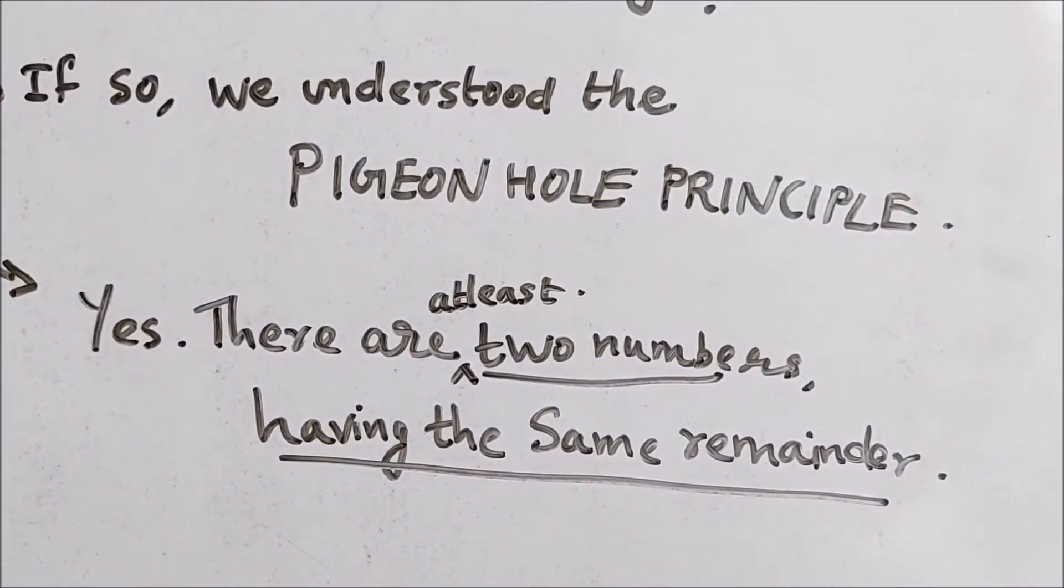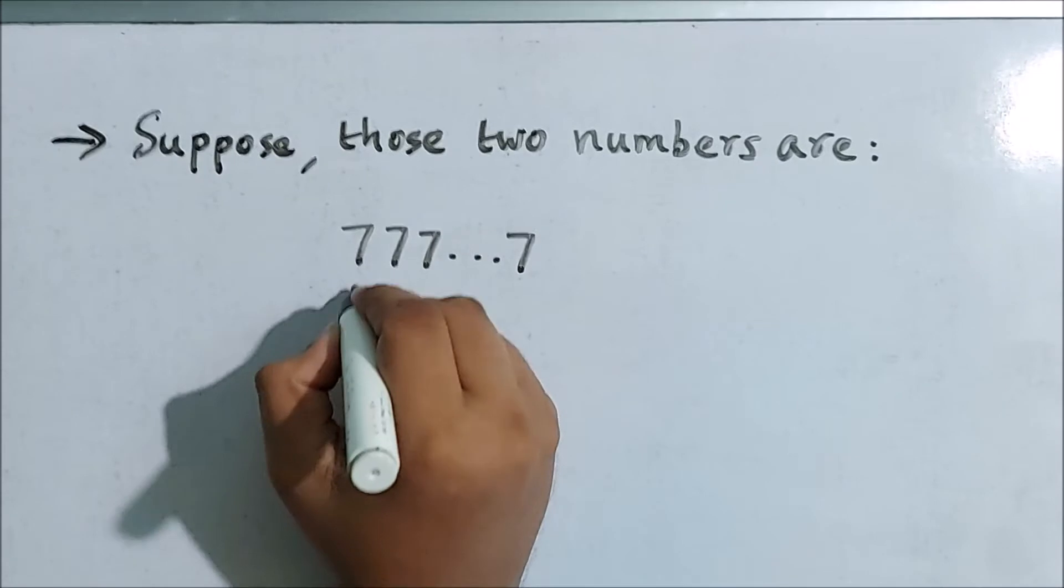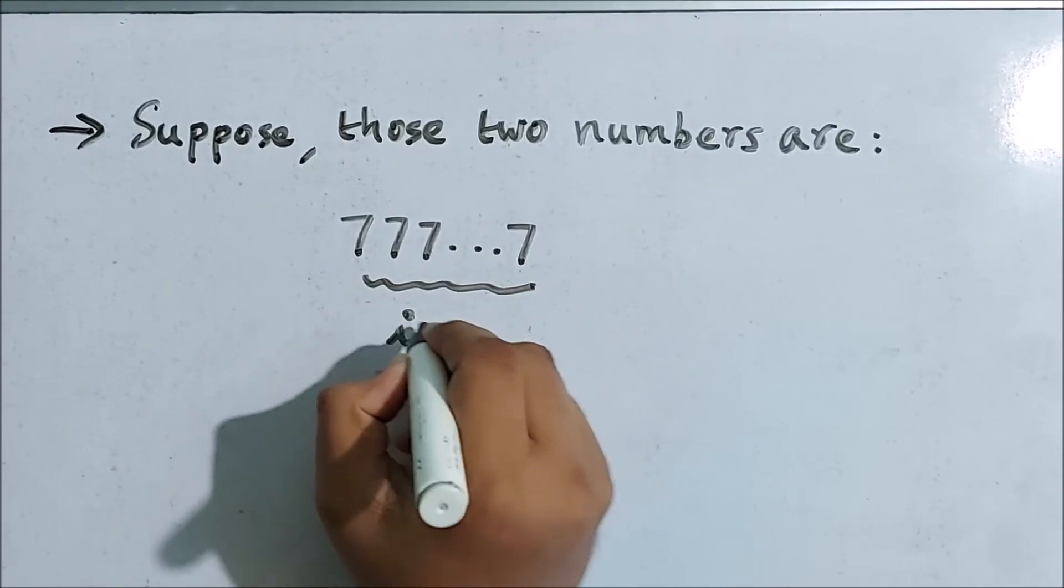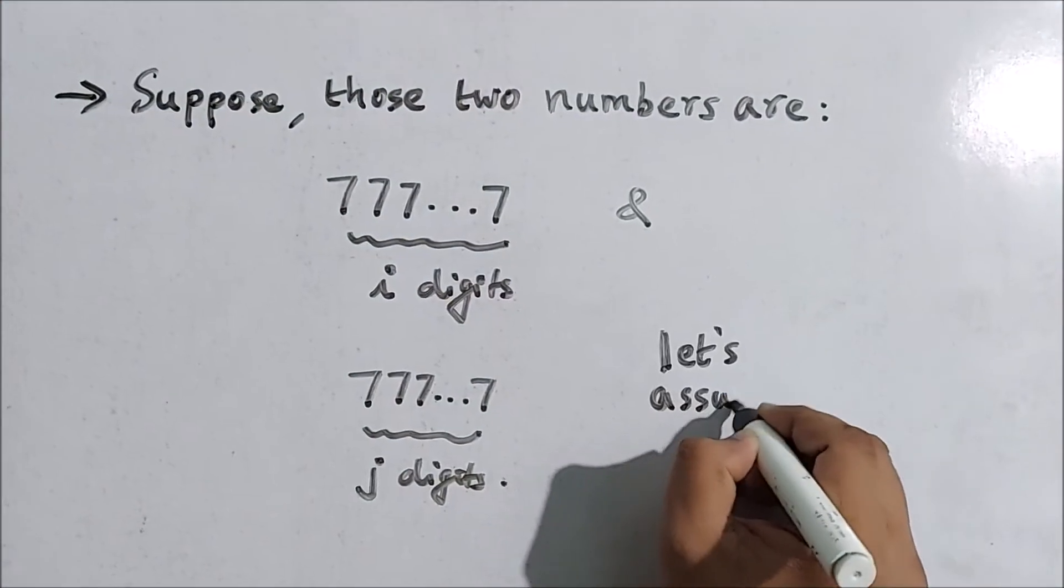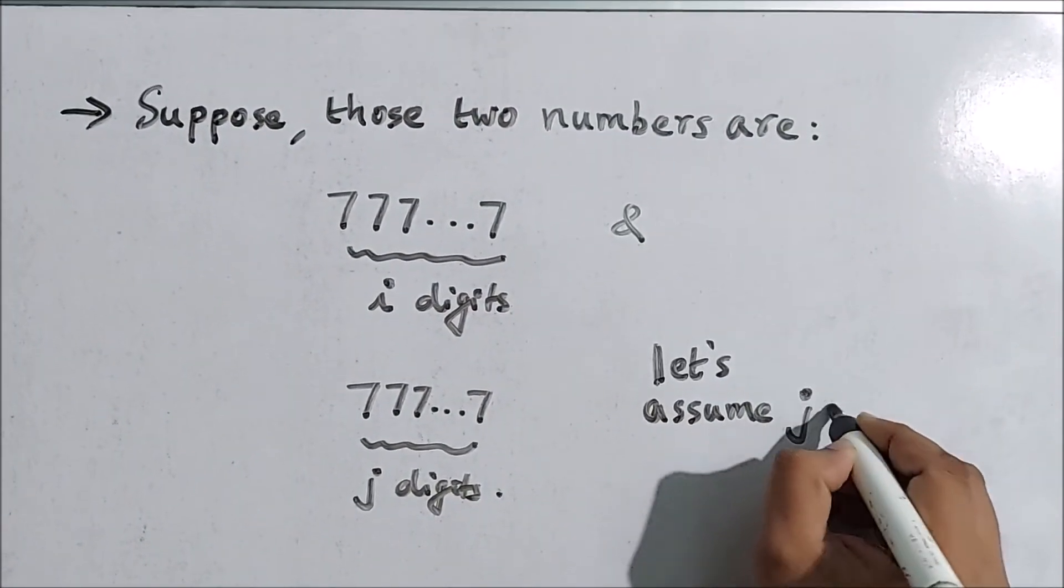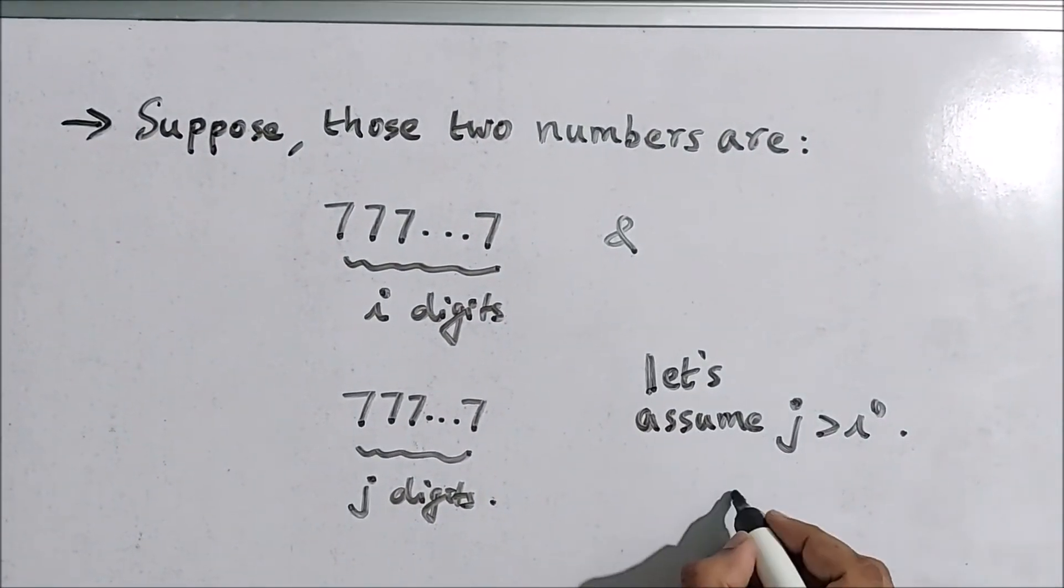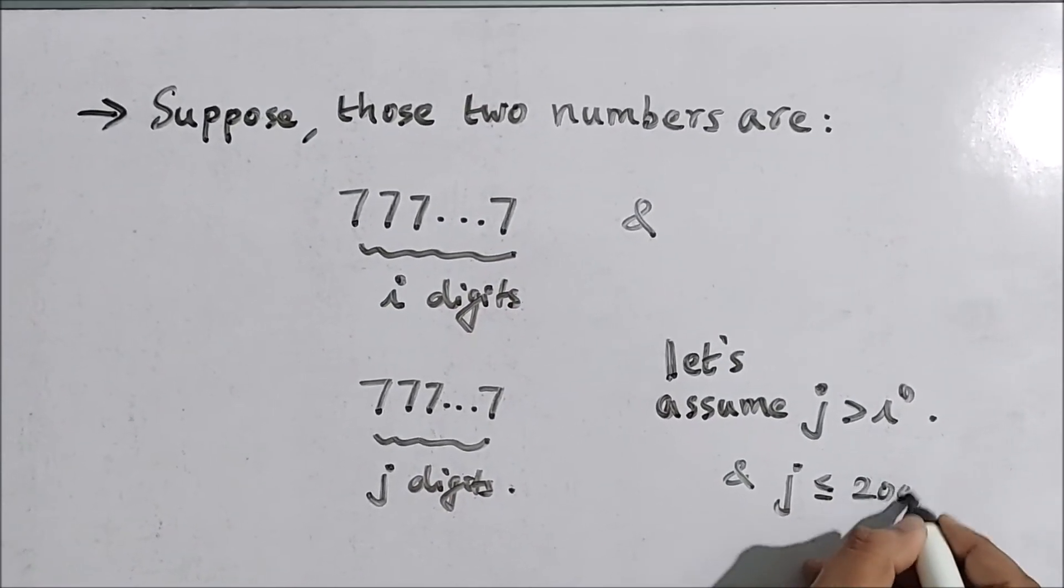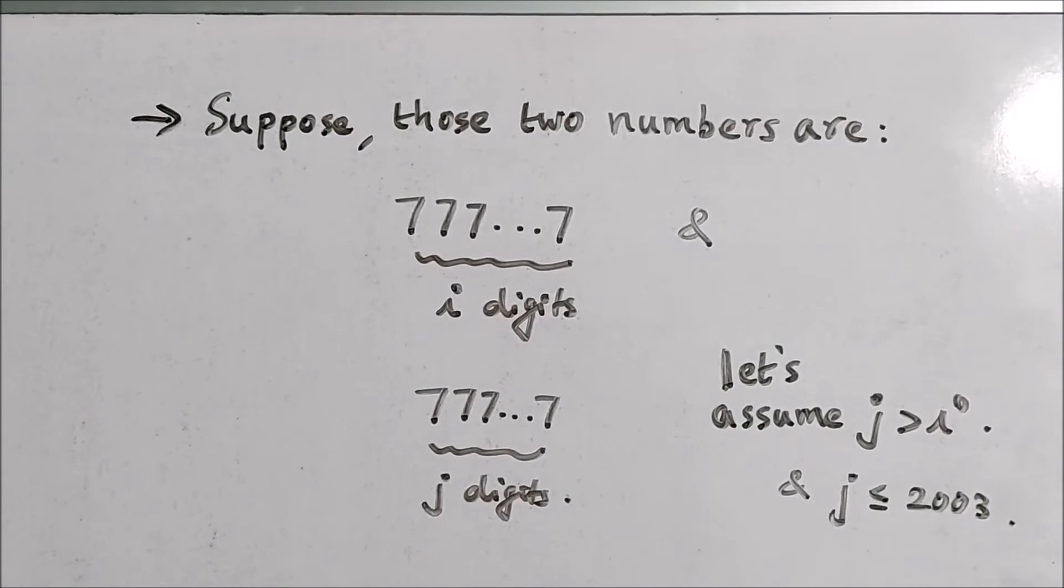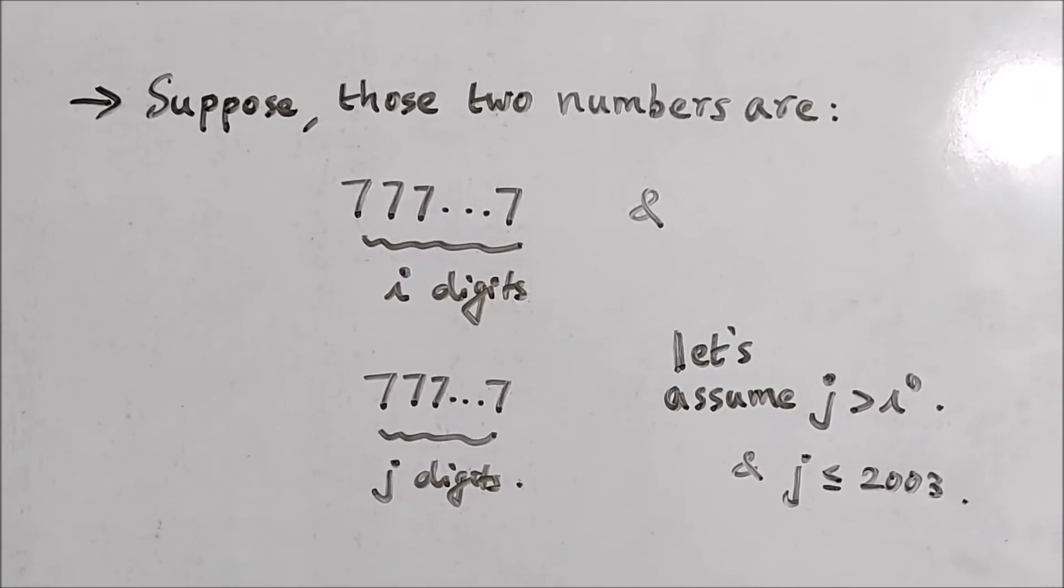So suppose these two numbers are 777...7 with i digits of 7 and 777...7 with j digits of 7. And let's assume that j is greater than i and of course j has to be at most 2003 because we are considering the first 2003 numbers in the sequence.